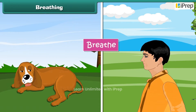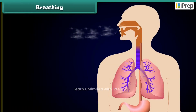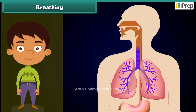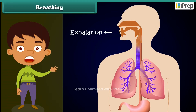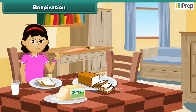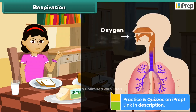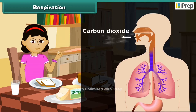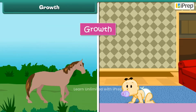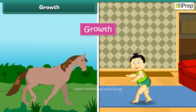All living things breathe. The process of breathing involves two steps: taking oxygen-rich air into the body, known as inhalation, and releasing carbon dioxide-rich air from the body, known as exhalation. Food gives us energy. The process of release of energy from food in our body is called respiration. Oxygen helps in respiration, and carbon dioxide is released during the process of respiration.